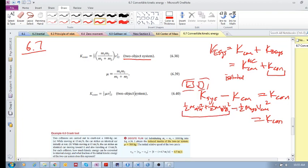I calculate the kinetic energy of my system, subtract the kinetic energy of the center of mass, and I can calculate the convertible kinetic energy. This is more intuitive to me, but if you rearrange this and solve for this, you end up with equation 638.